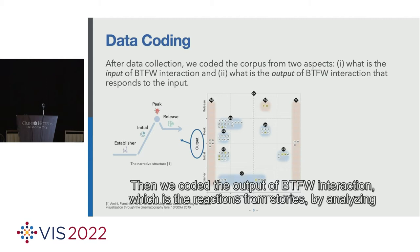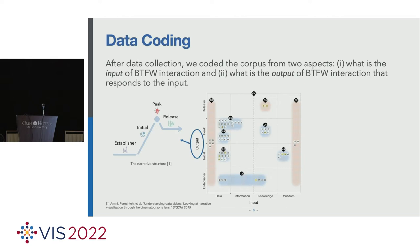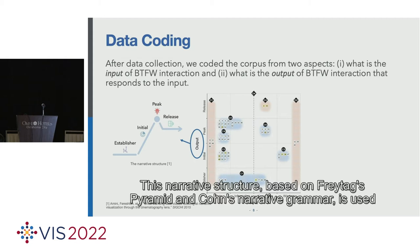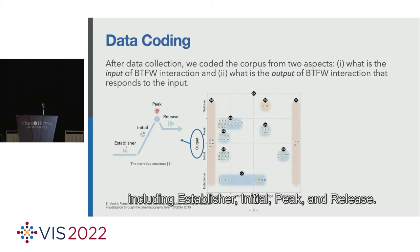Then, we coded the output of BTFW interaction, which is the reactions from stories, by analyzing how it integrates the input into the narrative or features of stories. To do this, we used the narrative structure developed by Emni. This narrative structure is used to classify the sequences of data videos regarding their role in the narrative, including establishing initial, peak, and release.